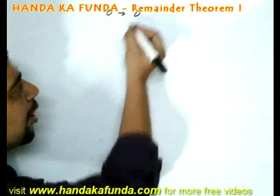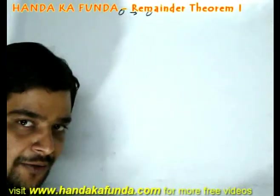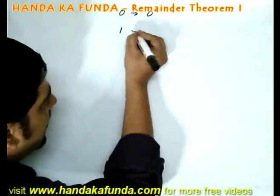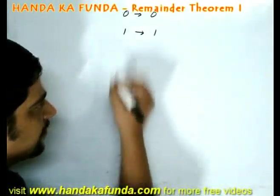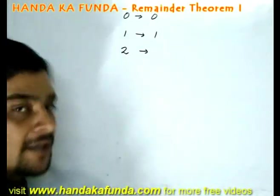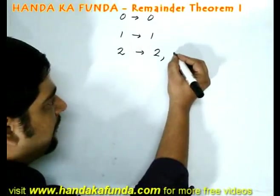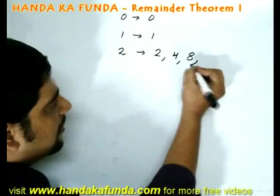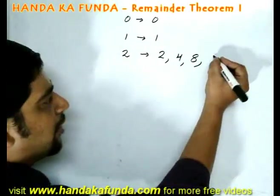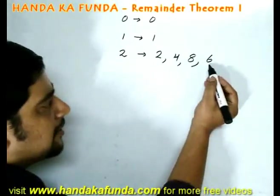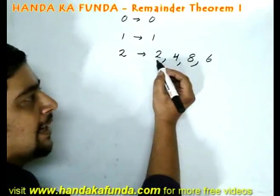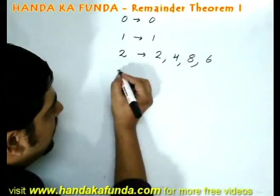0, any power will always end in 0 because 0 into 0 is 0. Same thing is applicable for 1 also. But not for 2. 2 to the power 1 ends in 2, 2 squared ends in 4, 2 cube ends in 8, 2 to the power 4 is 16 or it ends in 6. Then 6 into 2 is 12, so I get back 2 again.